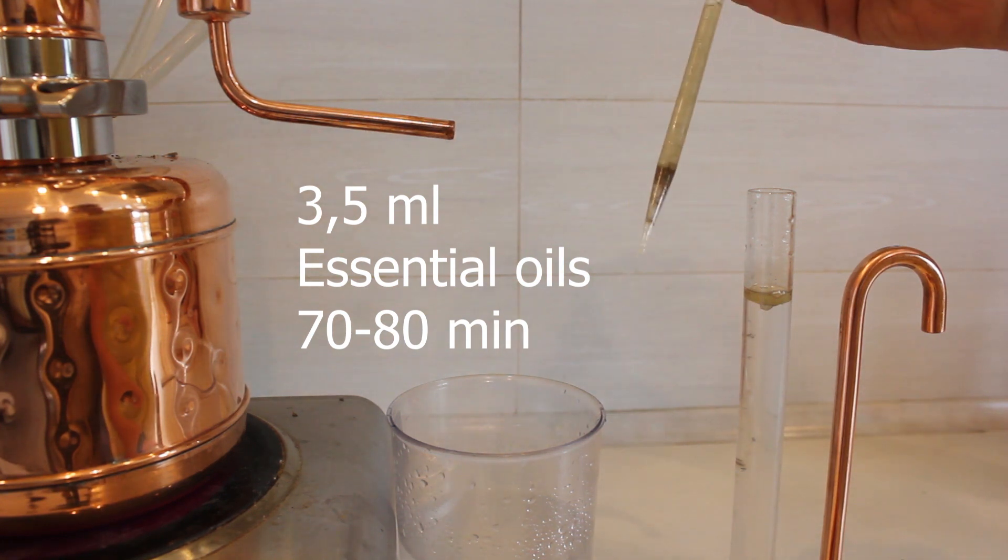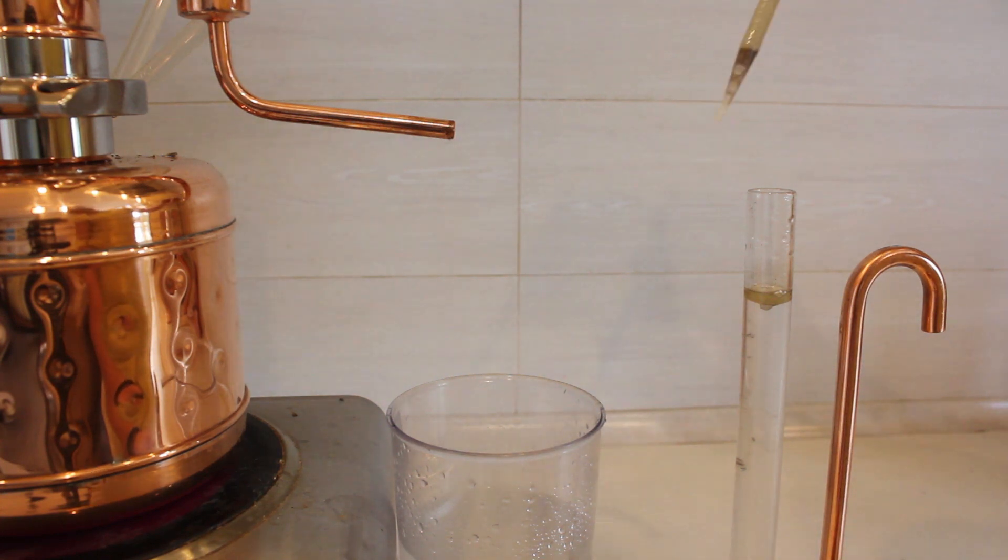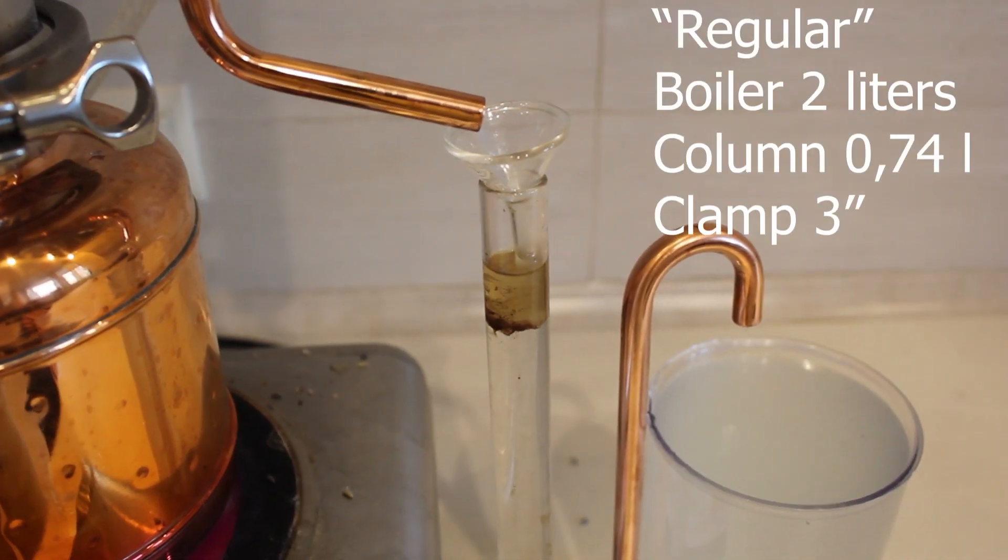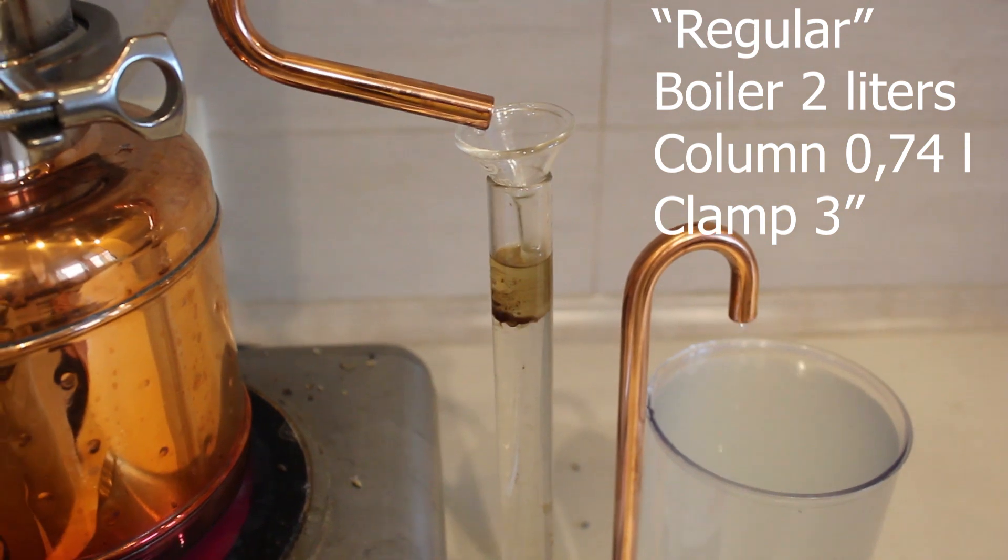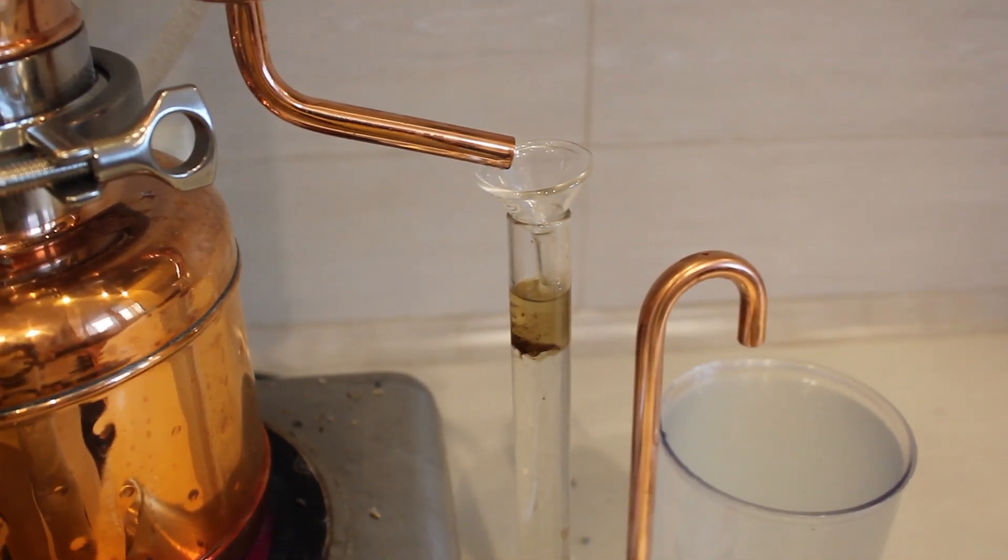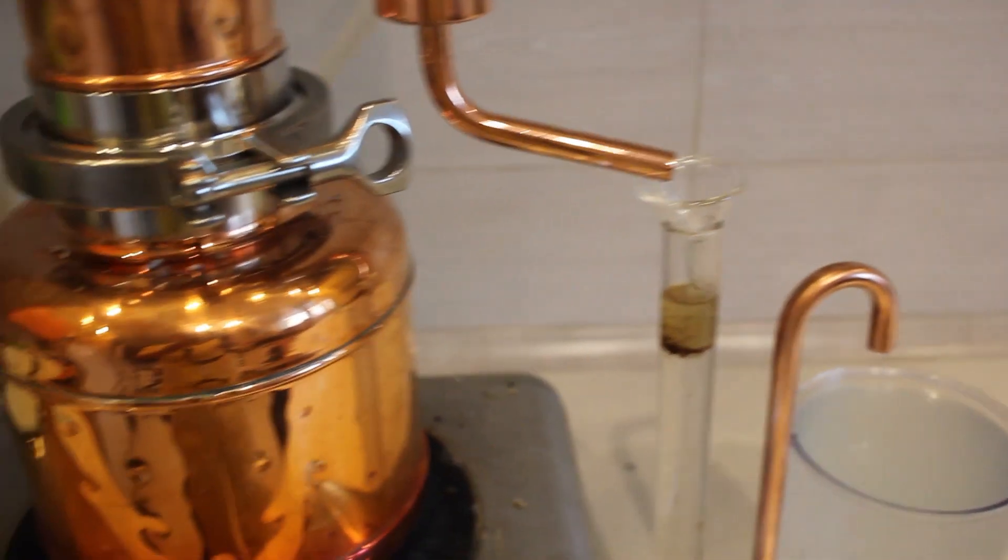Now we will be using a three-inch column and let's see how much essential oil we can get with the same quantity of lavender. We have got 20 millimeters of essential oil in our separator, which corresponds to four milliliters of essential oil.